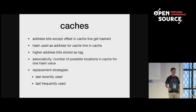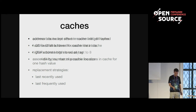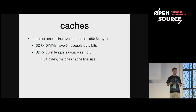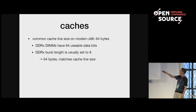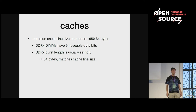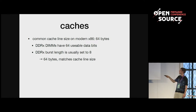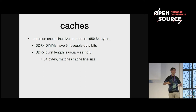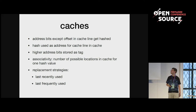For the caches, the smallest amount of memory that can be put in the cache is one cache line. On x86 it's typically 64 bytes. Where that number comes from: DDR DIMMs have 64 usable data bits (or 72 when using ECC error correction, but effectively 64 data bits), and the burst size is 8. You multiply those and get 64 bytes. So the caches and the memory — that size fits together.